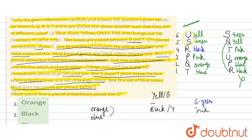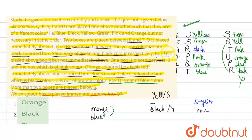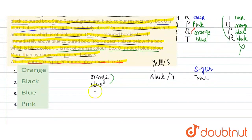यह हो गया आपका correct final arrangement। Given था U is not of orange color — देखें U yellow color है। Given box Q is not of blue color — देखें Q orange color का नहीं है। पूछा गया है which color box is placed immediately above box Q, so Q से immediately above जो color है वो है आपके पास pink, and pink आपका option number 4 है। So option number 4, pink is the correct answer. Thank you.